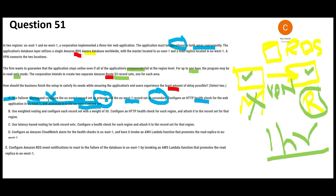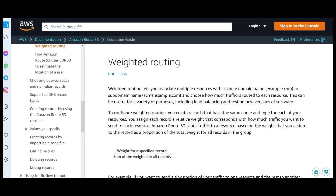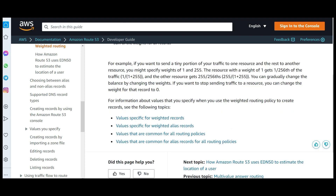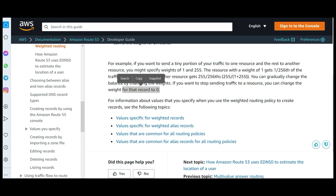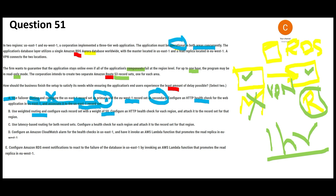Option B uses weighted routing with a weight of 50. Weighted routing is used to control how much traffic goes to each resource — you can set a weight of zero to stop traffic to a resource. The problem here is we don't know that a weight of 50 is appropriate, because the question is not about distributing load by weight. So option B is wrong. Note: we need to select two answers.